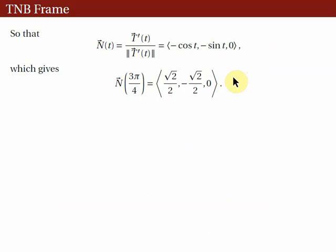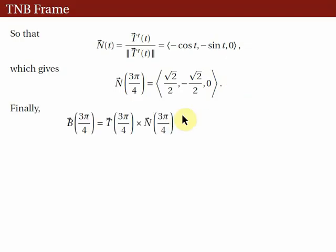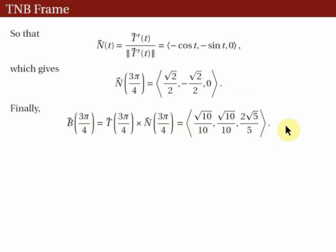Finally, we determine the unit binormal vector B at t = 3π/4. That is just the cross product of T and N: B = T × N at t = 3π/4. Taking the cross product, we get the resulting vector. Verify that you will get this vector.